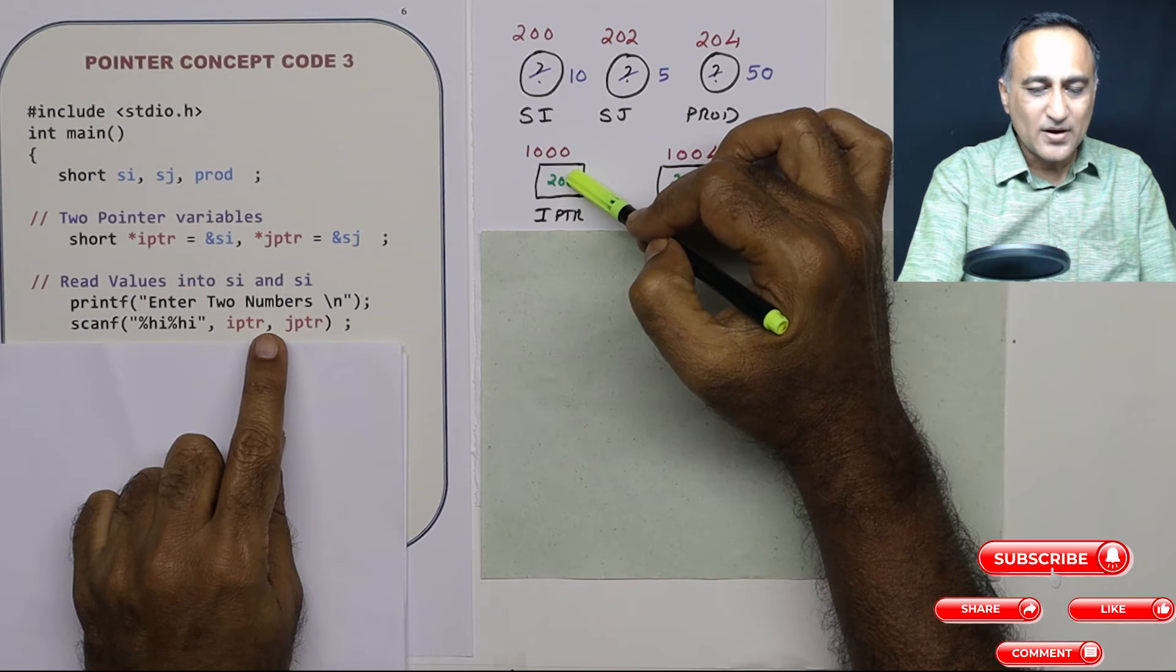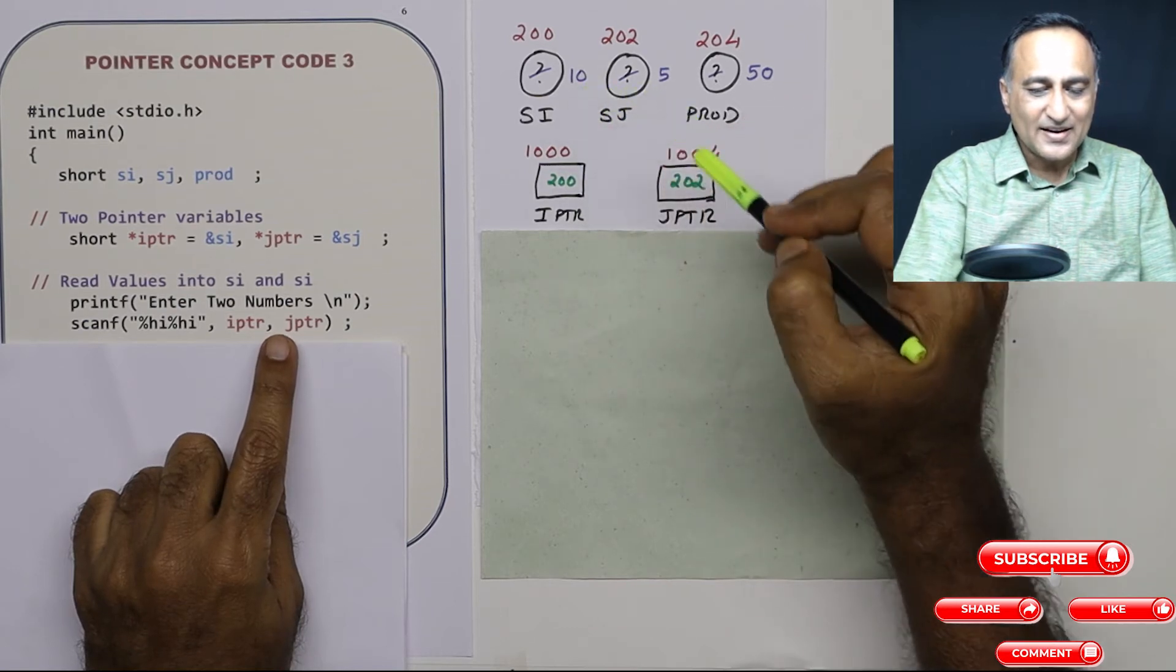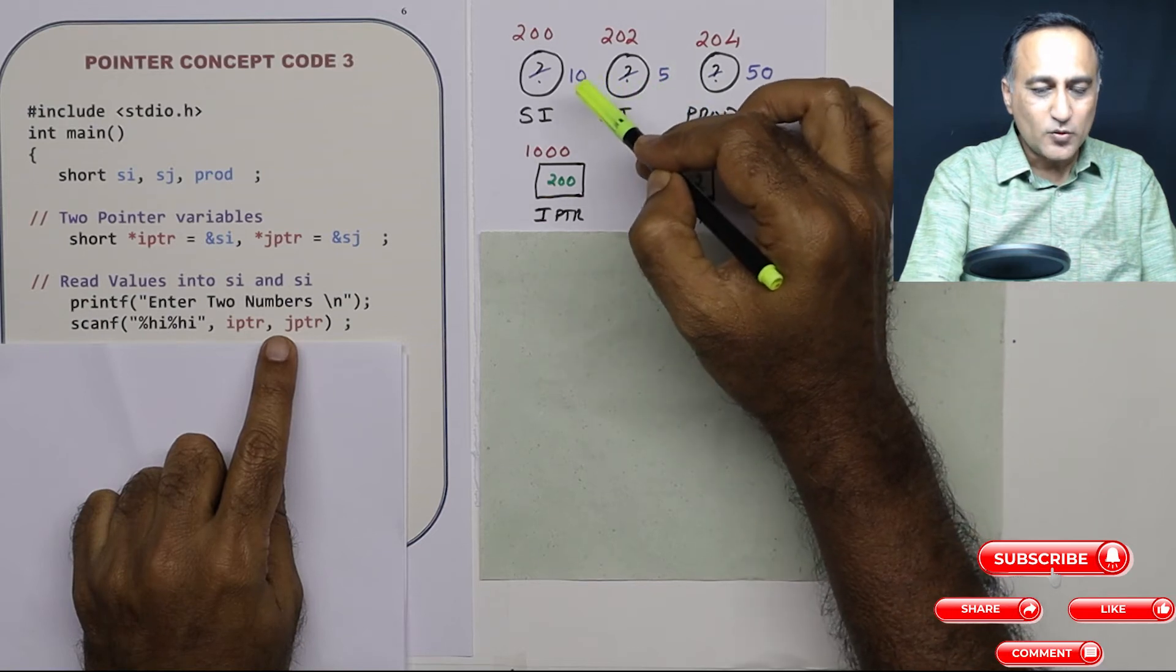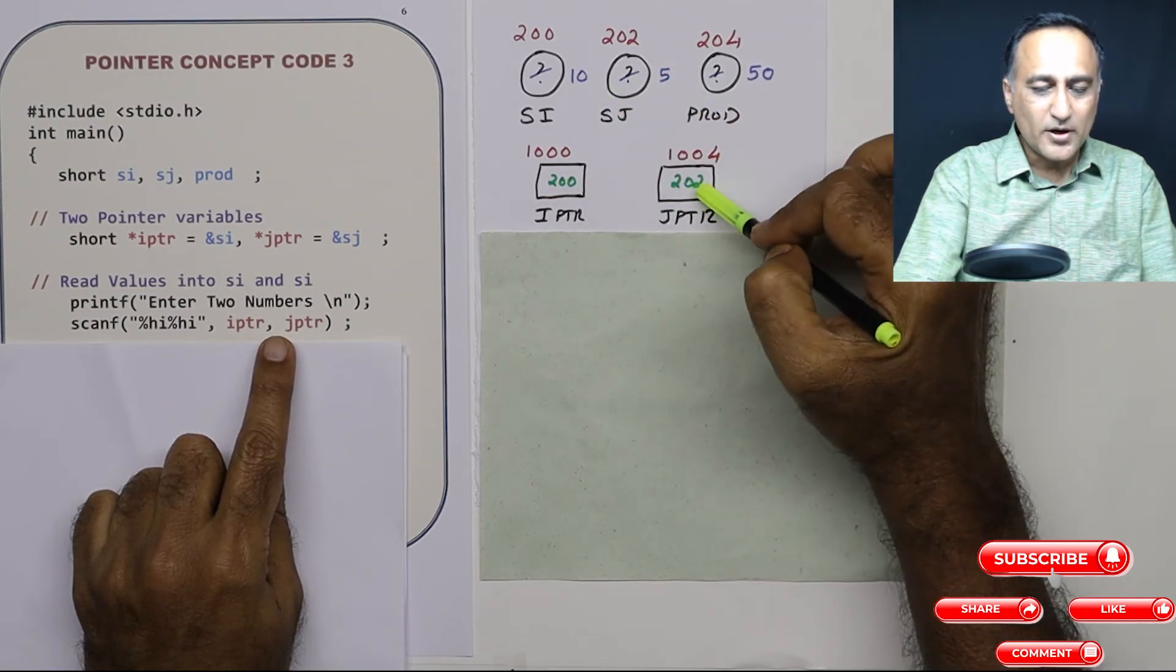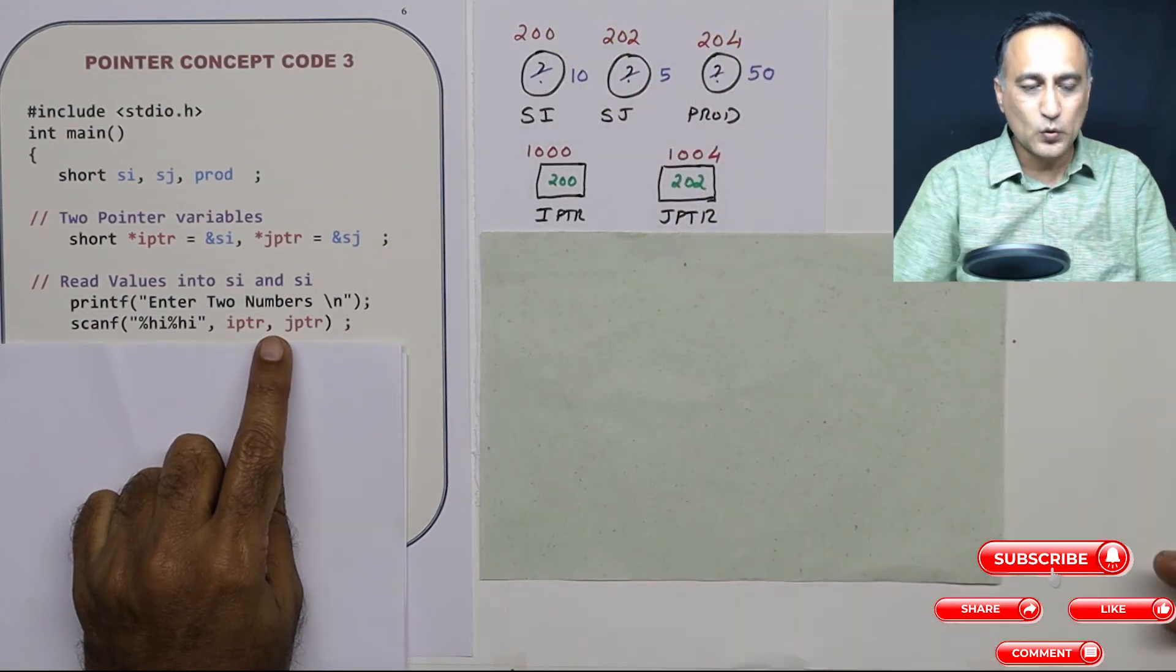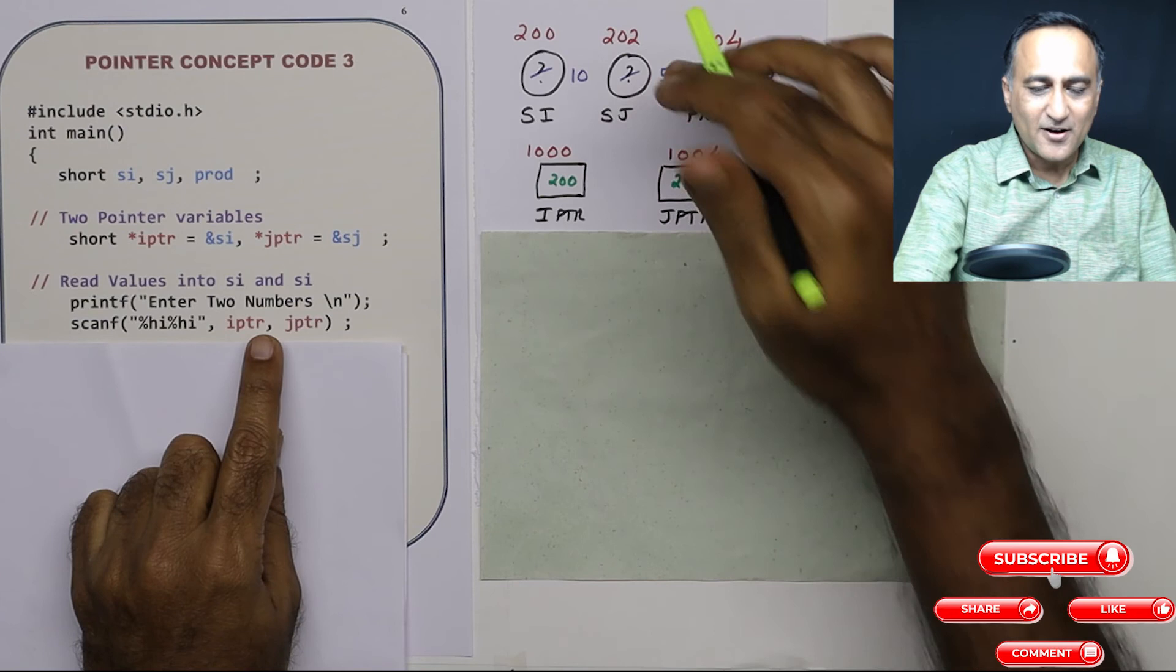Let us say at address 200, 10 is entered, and at address 202, 5 is entered. So what do address 200 and 202 represent? They represent SI and SJ with the addresses 200 and 202. So we have entered 10 and 5.